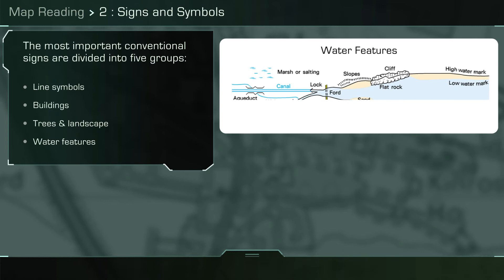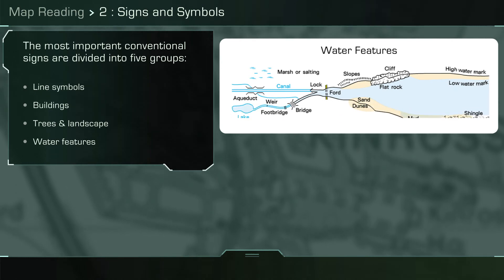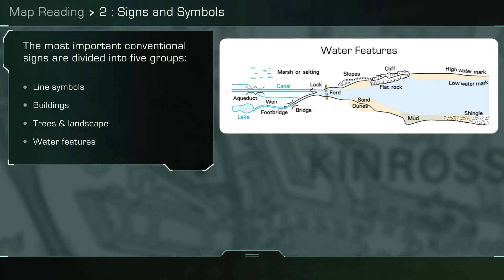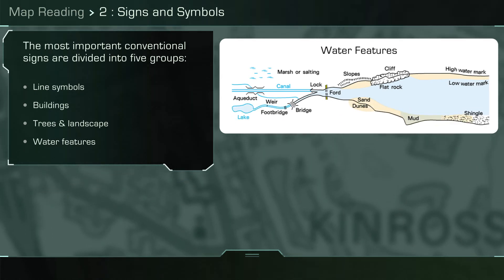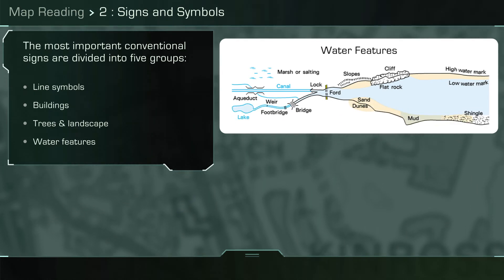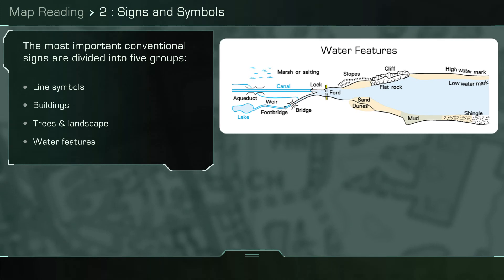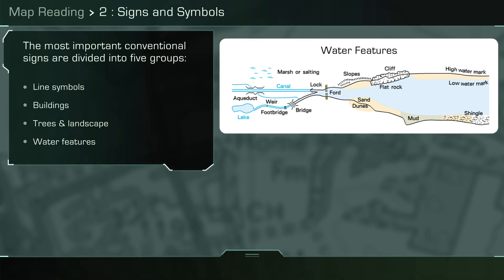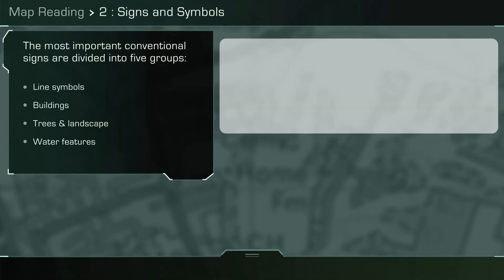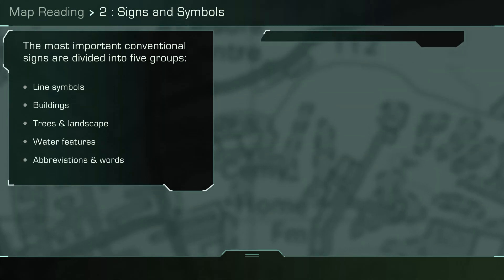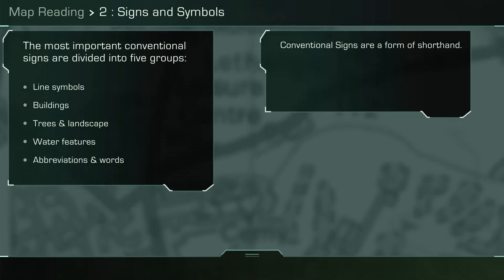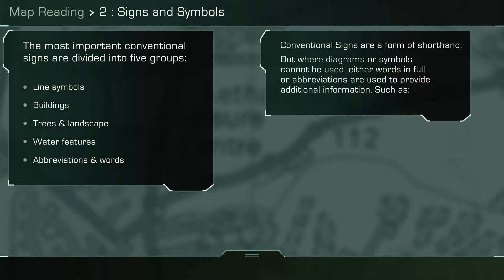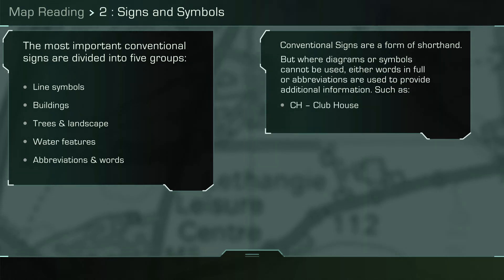Water features are clearly shown in blue and are particularly important because they can be both an obstacle and a good navigation tool for military movement. Where diagrams or symbols can't be used, either words or abbreviations such as those shown are used to provide additional information.